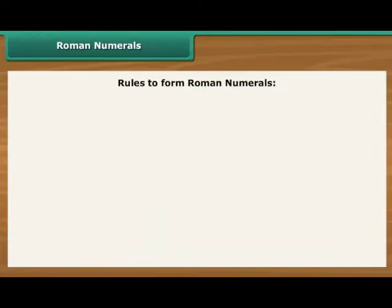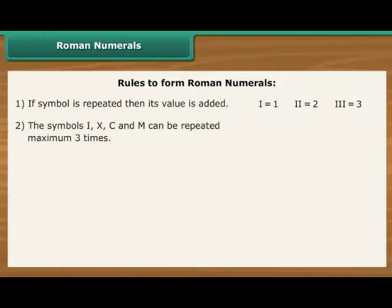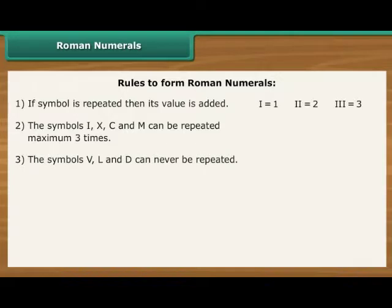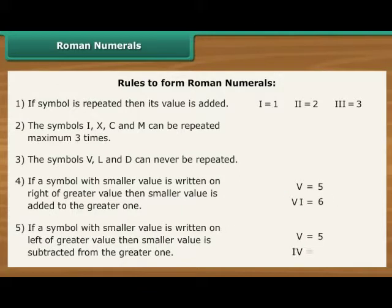There are certain rules to form Roman numerals. They are: 1. If a symbol is repeated, then its value is added. 2. The symbols I, X, C and M can be repeated maximum three times. 3. The symbols V, L and D can never be repeated. 4. If a symbol with smaller value is written on right of greater value, then smaller value is added to the greater one. 5. If a symbol with smaller value is written on left of greater value, then smaller value is subtracted from the greater one.